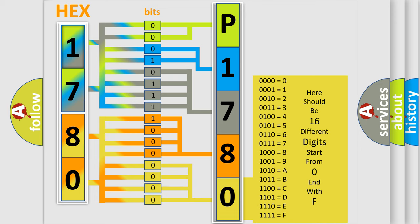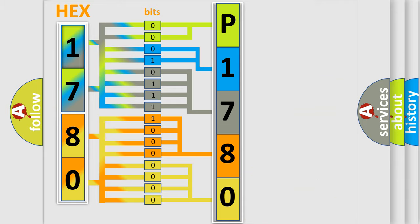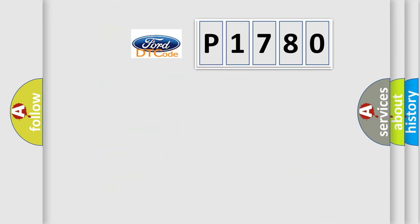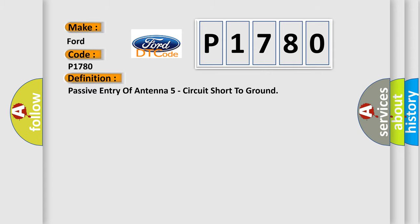We now know in what way the diagnostic tool translates the received information into a more comprehensible format. The number itself does not make sense to us if we cannot assign information about what it actually expresses. So, what does the diagnostic trouble code P1780 interpret specifically for Infiniti car manufacturers? The basic definition is: Passive Entry Antenna 5 circuit short to ground.